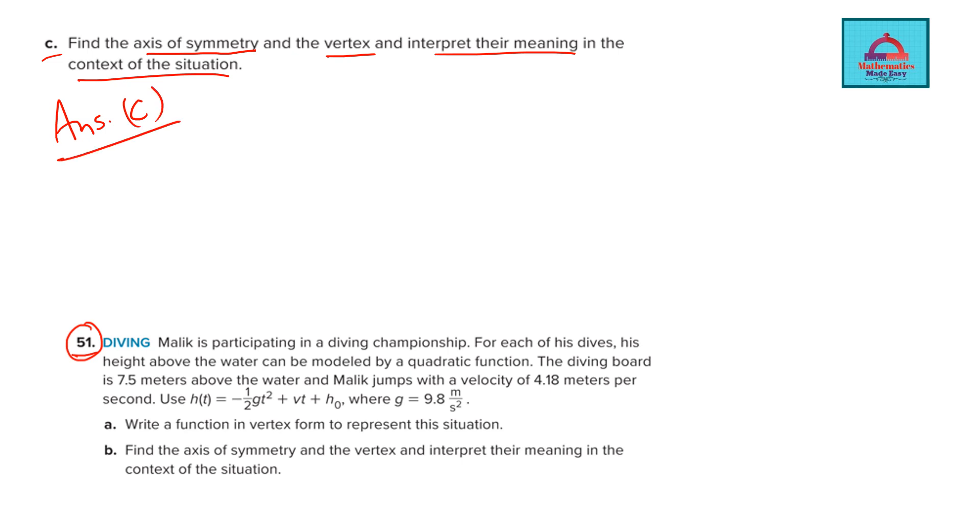So in order to answer C part, we will use the answer we got from B part. So I will rewrite h(t) is equal to minus 16 times (t minus 3) whole square plus 146. So this was your function h(t) in the vertex form. So from here, we are getting the answer for C part.